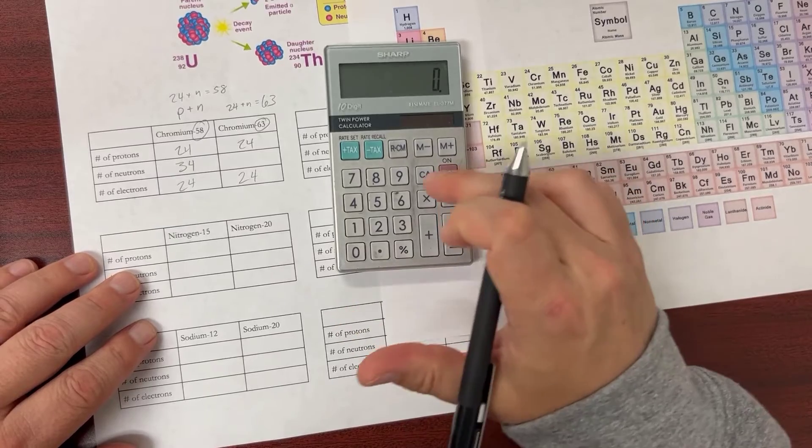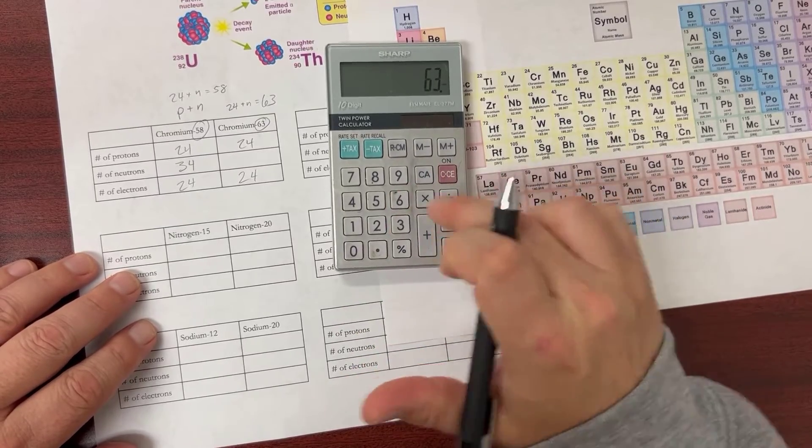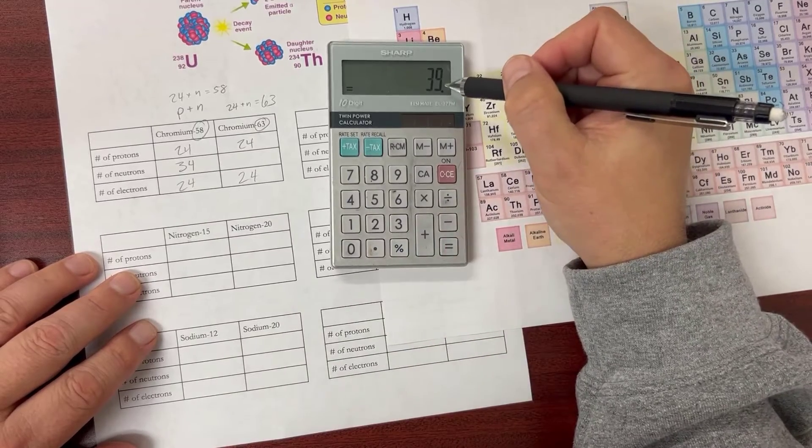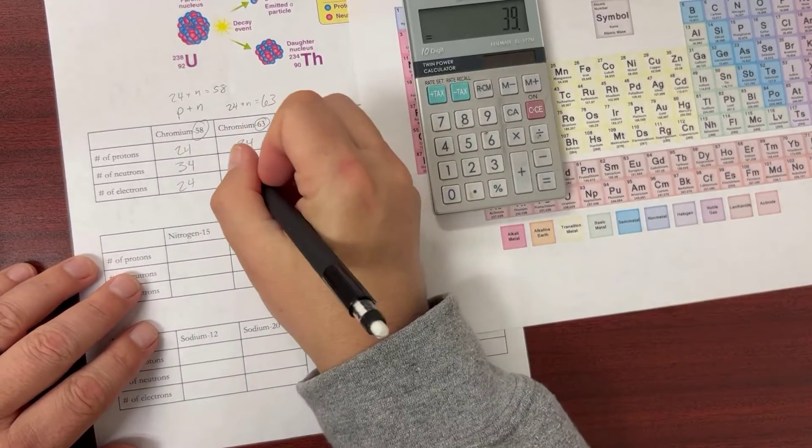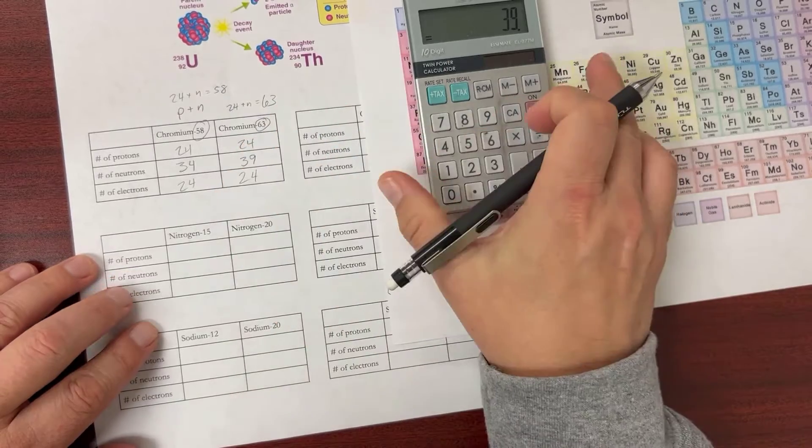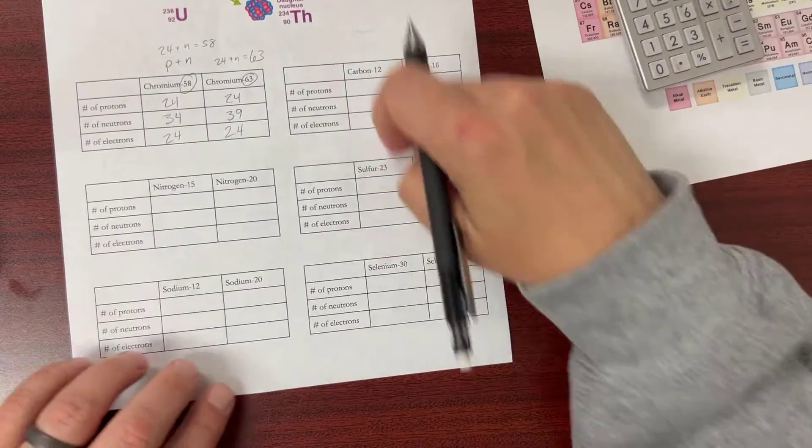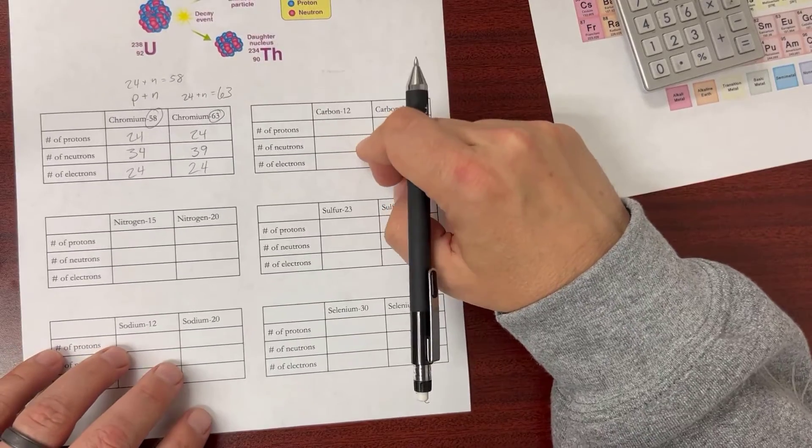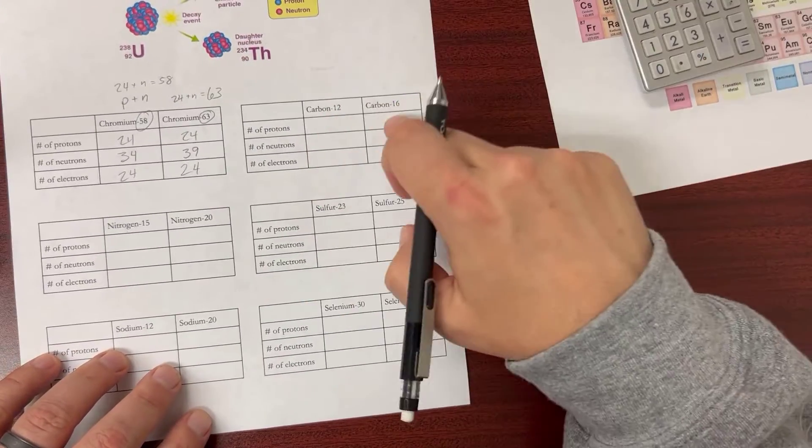So again, I take my calculator: 63 - 24 protons, and that's 39 neutrons. You're going to do that same thing for all these other ones. I think I'll do one more quick one with you—carbon-12 and carbon-16.